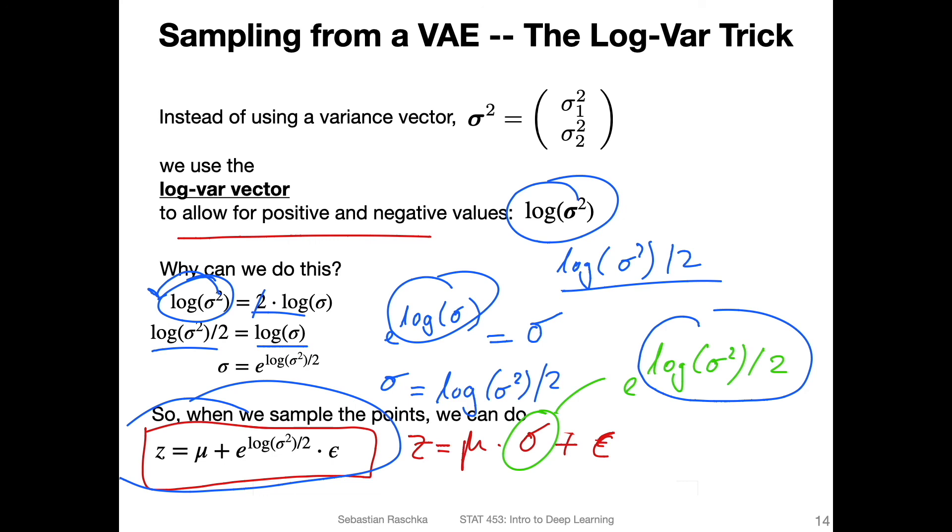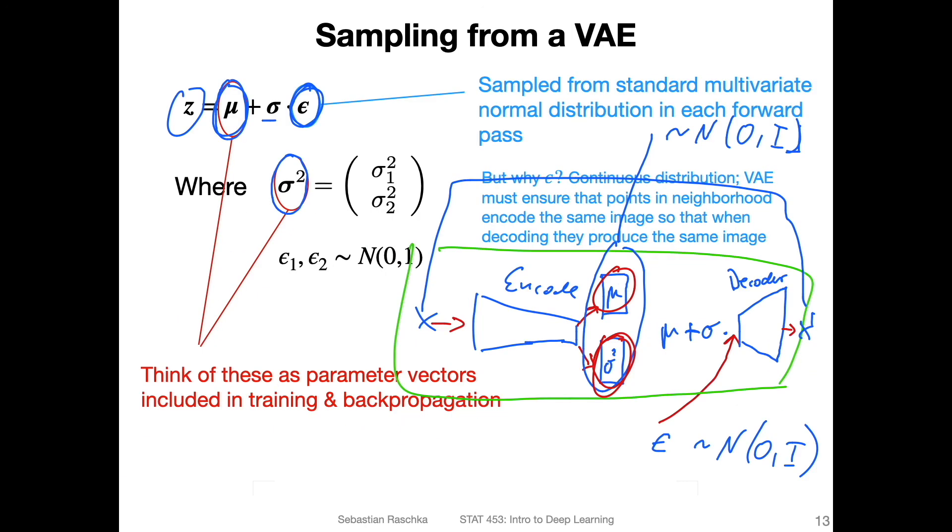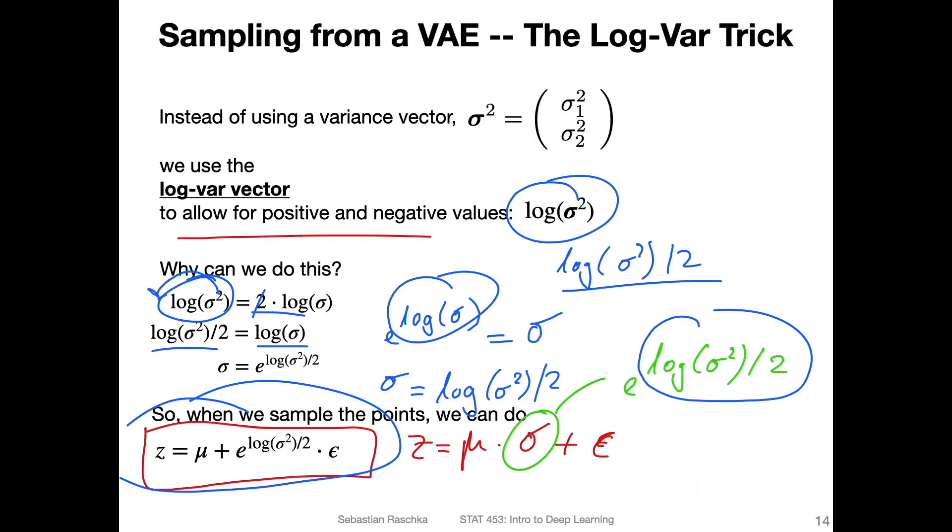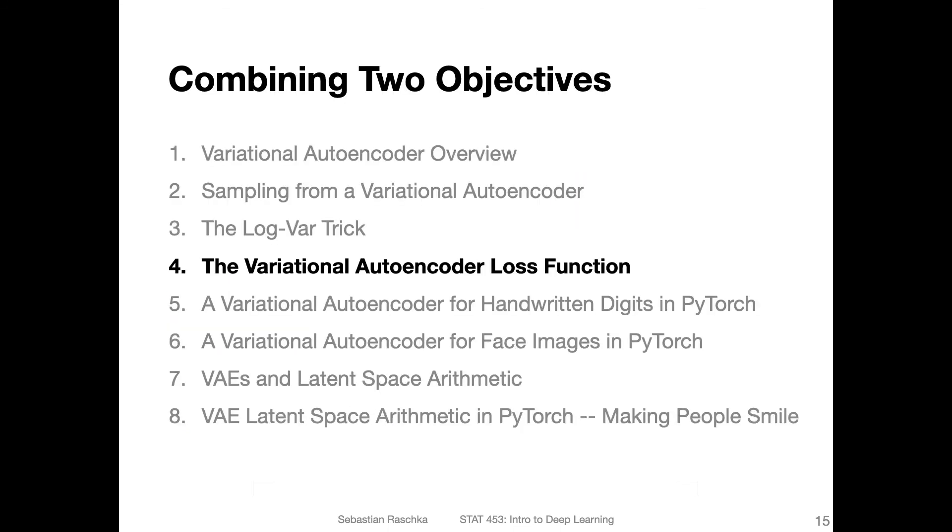So this is how we would implement that. Because then if I go back one more slide, instead of having this here, we will have a vector that we call log variance. This allows us this vector to have positive and negative values, which is also true for the mean vector here. So if this was abstract, in the code example I hope this will become more clear. So in the next video, let me briefly talk about the loss function in the variational autoencoder. And then we will finally see our first code example.